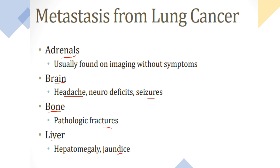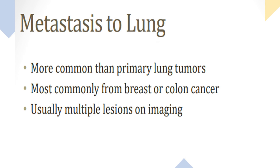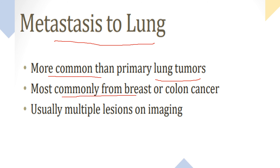Metastatic lung cancer refers to secondary tumors arising from other organs, which are more common than primary lung cancer. When you find a lung tumor, first think of secondary before primary. Common sources include breast cancer, colorectal cancer, and other GIT cancers. Metastatic lesions are typically multiple, bilateral, irregular, and greater than one centimeter in size.